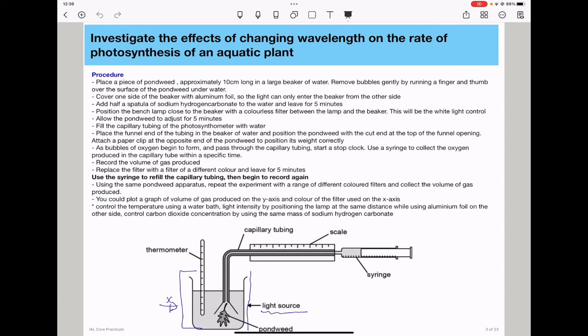So you will keep the same aluminum foil on this side. Then the used light source is going to be positioned at the same distance. We will just be changing the color filters in order to introduce a new wavelength. And finally, we can control carbon dioxide concentration by using the same mass of sodium hydrogen carbonate. You will perform all experiments using the same chosen mass of sodium hydrogen carbonate.